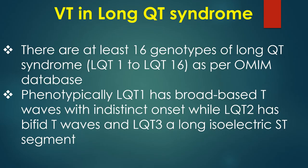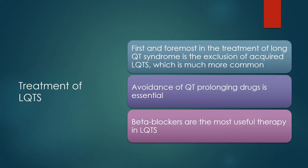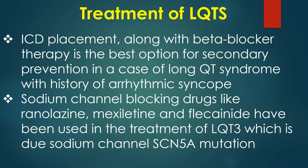There are at least 16 genotypes of long QT syndrome, LQT1 to LQT16, as per the OMIM database. Phenotypically, LQT1 has broad-based T waves with indistinct onset, LQT2 has bifid T waves, and LQT3 has a long isoelectric ST segment. First and foremost in treatment of long QT syndrome is exclusion of acquired LQTS. Avoidance of QT-prolonging drugs is essential. Beta blockers are the most useful therapy. ICD placement with beta blocker therapy is the best option for secondary prevention in long QT syndrome with history of arrhythmic syncope. Sodium channel blocking drugs like ranolazine, mexiletine, and flecainide have been used in LQT3, which is due to sodium channel SCN5A mutation.